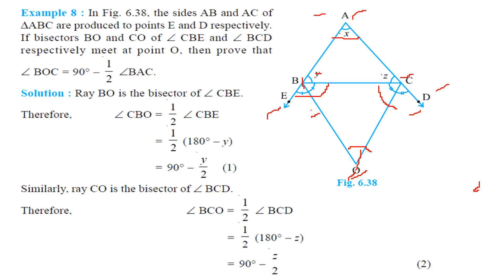Ray BO is the bisector of angle CBE, so angle CBO equals half of angle CBE. Taking angle ABC as y, angle CBE equals 180 minus y, so angle CBO equals half of (180 minus y), which is 90 minus y by 2.